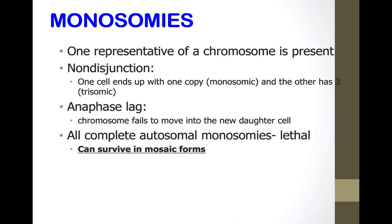Monosomies: only one representative of a chromosome is present due to non-disjunction, where one cell ends up with one copy. Autosomal monosomies are lethal — you cannot survive with a missing autosome. Loss of a chromosome is more severe than gaining one.